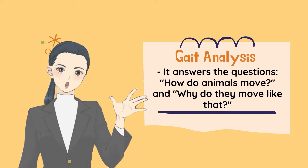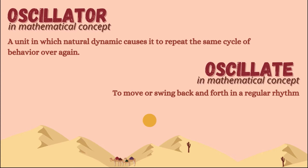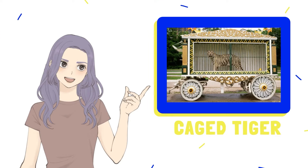Gait analysis is also a branch of mathematical biology that answers the questions: how do animals move, and why do they move like that? These general mathematical concepts apply to many different levels and things. Now, we will be discussing oscillation. Oscillation means to move or swing back and forth in a regular rhythm. An oscillator is a unit whose natural dynamic causes it to repeat the same cycle of behavior over and over again. So why do systems oscillate? It is the simplest thing if you don't want to remain still and when you cannot escape. For example, a caged tiger paces up and down because it feels restless and does not want to sit still, and another possible reason is that it is confined in a cage because it cannot disappear over the nearest hill.